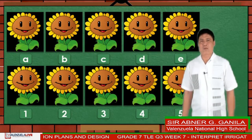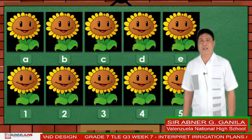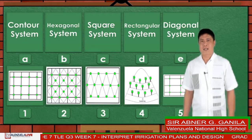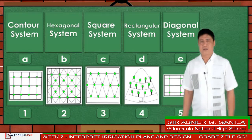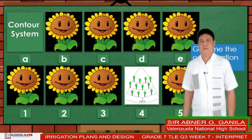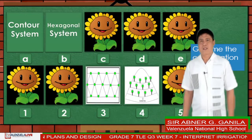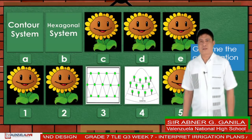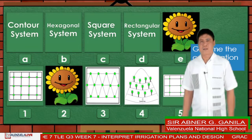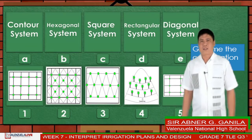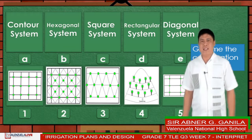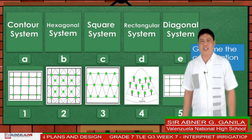Match the planting system to its picture. Your answer should consist of a letter and number, for example A1. Are you ready? The correct answers are: contour system — A4, hexagonal — B3, square — and absolutely correct — C1.